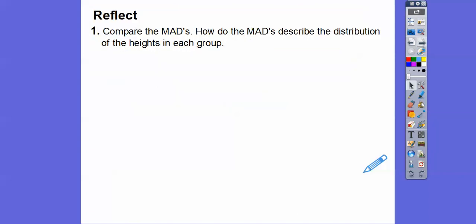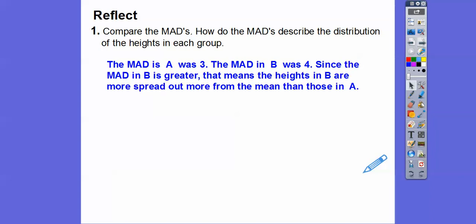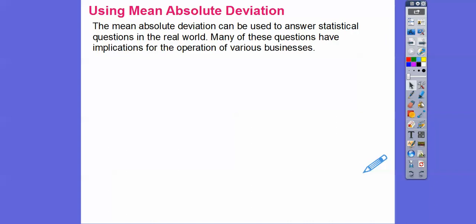Compare those two MADs. How do the MADs, the mean absolute deviations, describe the distribution of the heights in each group? Well, the MAD in A was 3. The MAD in B was 4. Since the MAD in B is greater than the mean, the heights in B are more spread out from the mean than those in A. It just means those numbers are more spread out away from their mean.